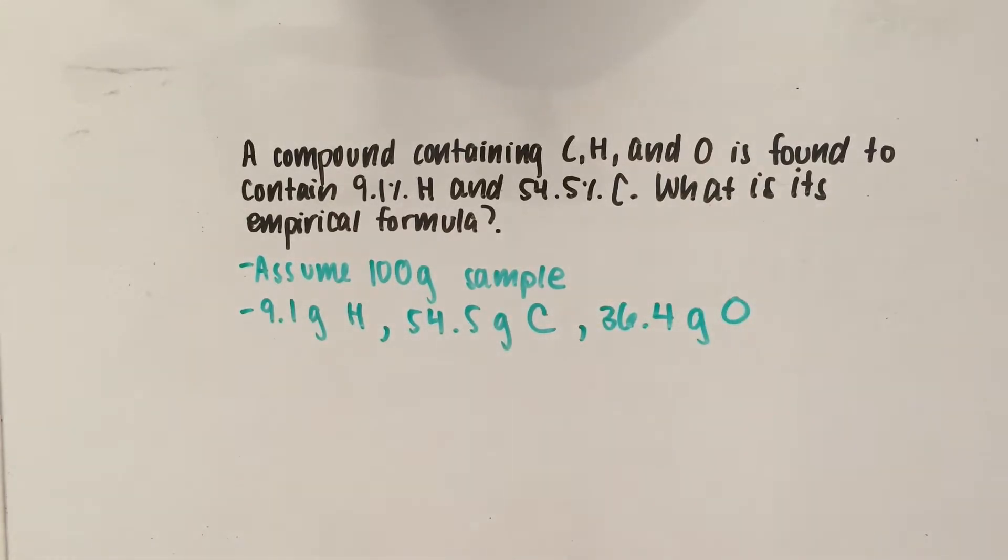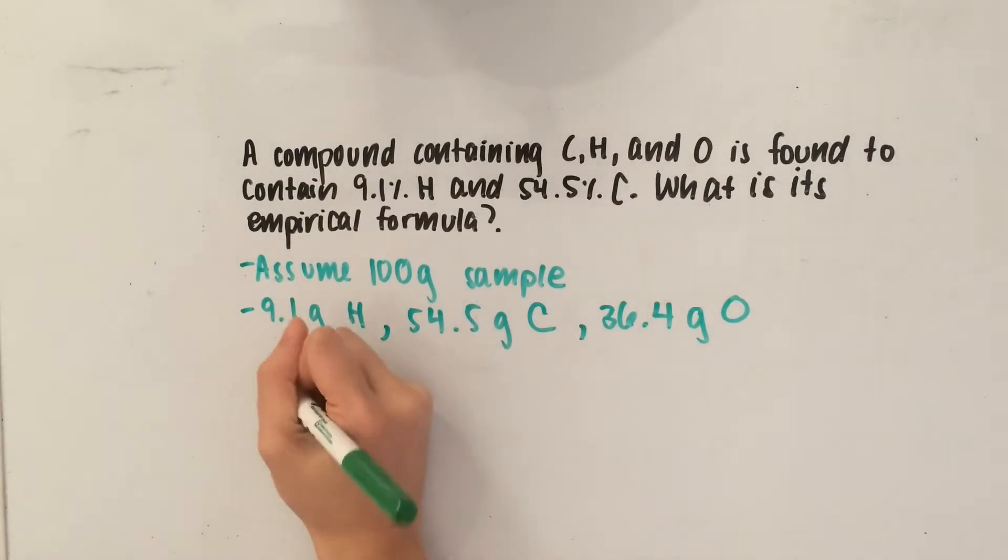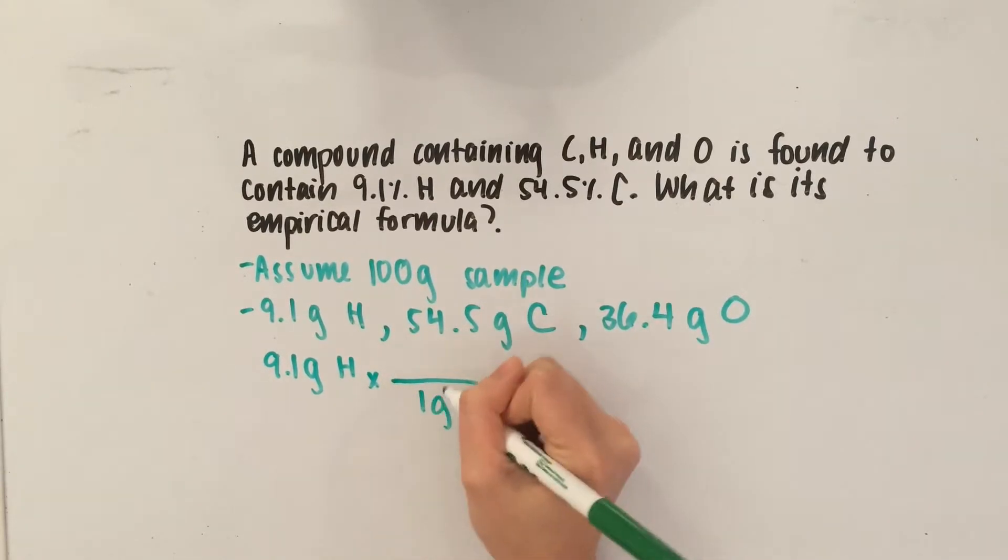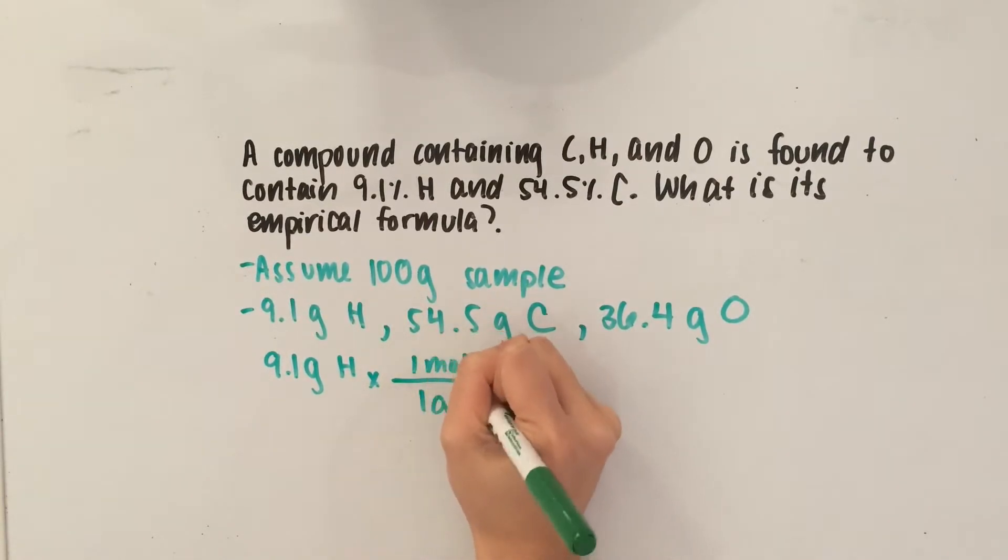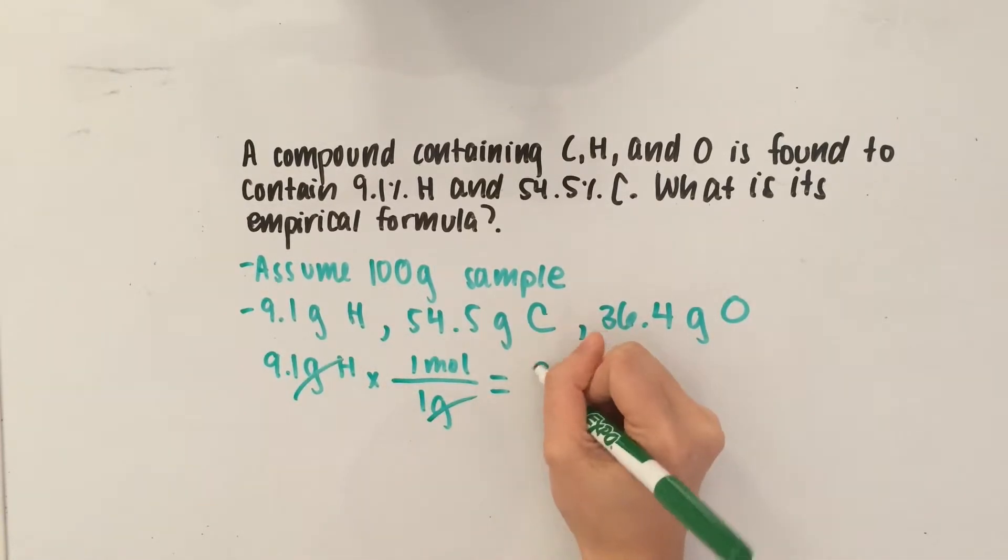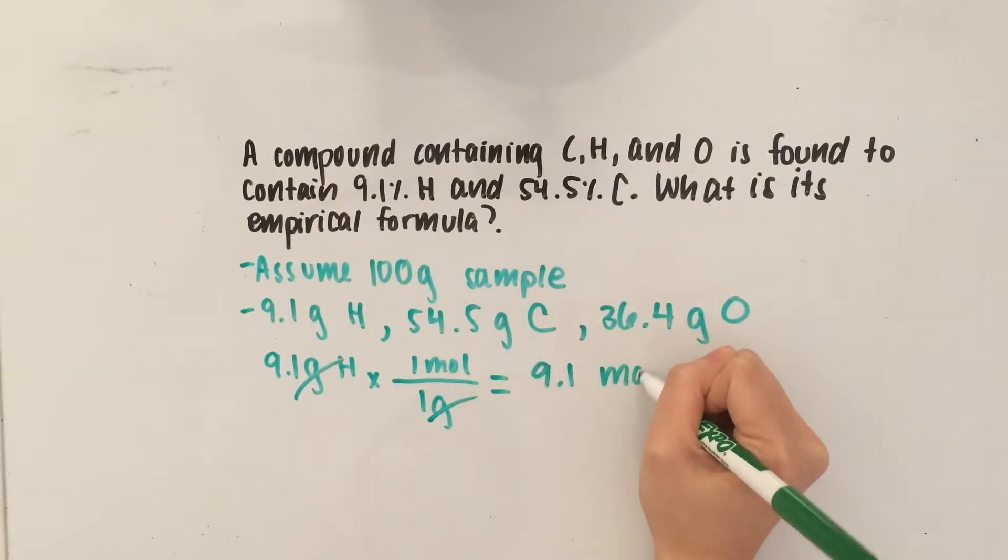So, now, what we need to do is convert all of these masses to moles. That way, we can find the empirical formula. So, 9.1 grams of hydrogen, we multiply that by the molar mass, which is approximately 1 gram per mole for hydrogen. The grams cancel out, and we're left with 9.1 moles of hydrogen.